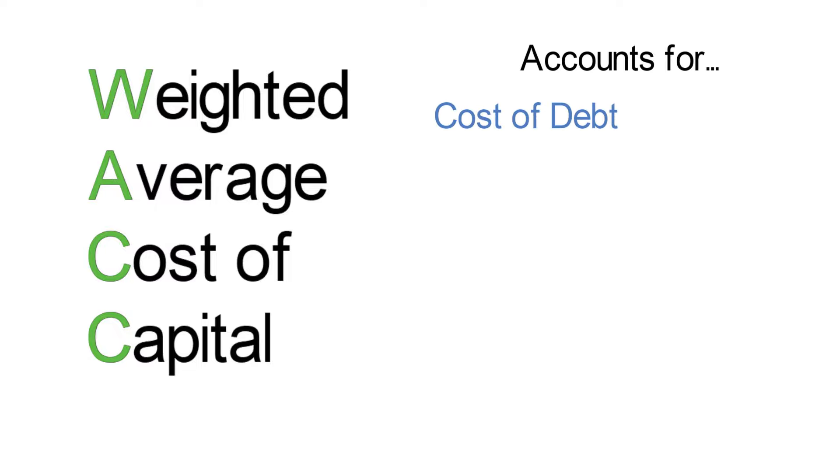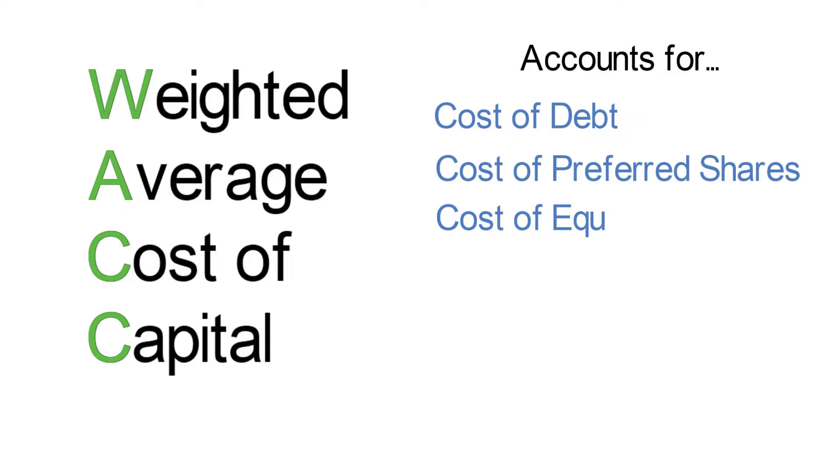Weighted Average Cost of Capital is often called WACC for short. Basically, WACC is a way to calculate the cost of capital for a company. WACC takes into account the cost of debt, the cost of preferred shares if the company has any, and the cost of the company's equity. So let's look a bit closer.